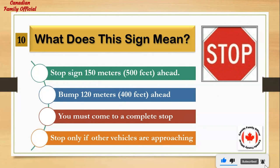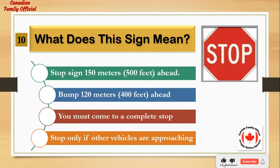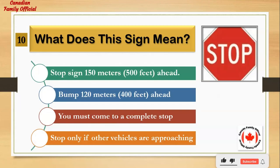What does this sign mean? Number 1: stop sign 150 meters (500 feet) ahead. Number 2: bump 120 meters (400 feet) ahead. Number 3: you must come to a complete stop. Number 4: stop only if other vehicles are approaching. And the answer is: you must come to a complete stop.